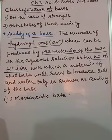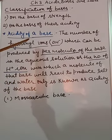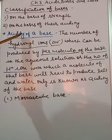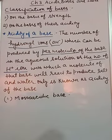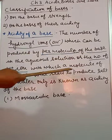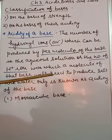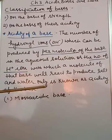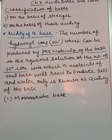So continuing with that, now we are going to discuss classification of bases on the basis of their acidity. Now what is the meaning of this term acidity? Actually acidity of a base is the number of hydroxyl ions produced by one molecule of the base in aqueous solution, or the number of hydroxyl ions with which a molecule of that base will react to produce salt and water. That is known as acidity of the base.